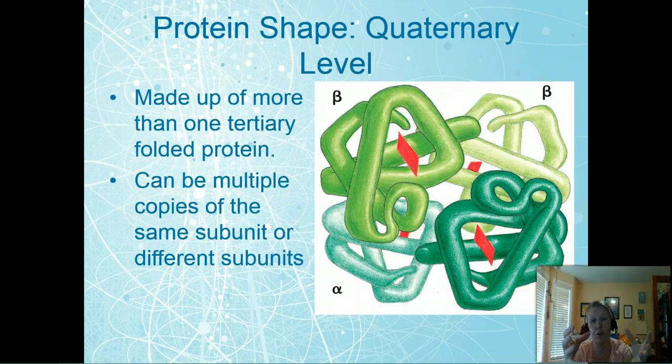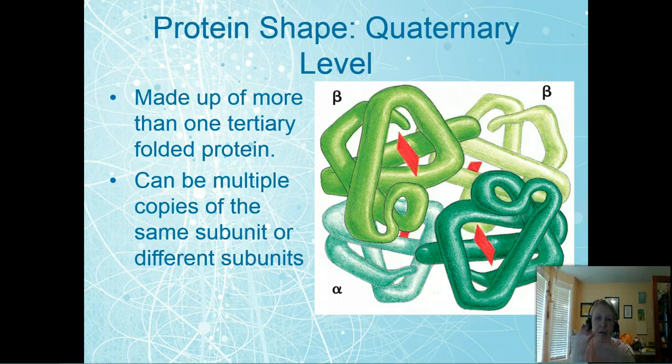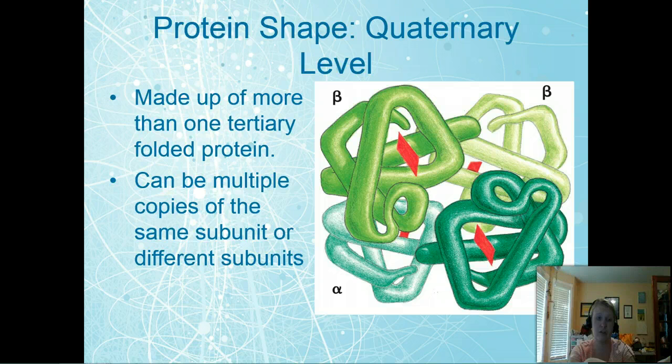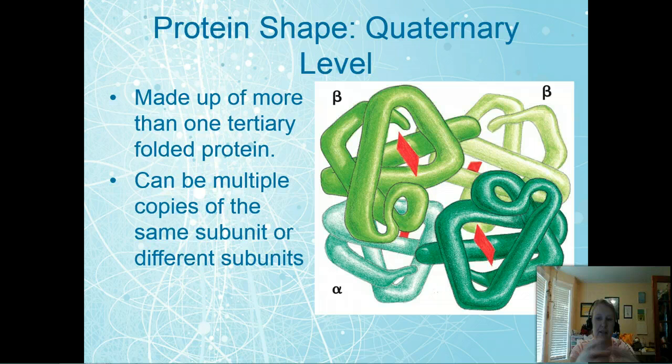When you have more than one of these domains this is where we get the quaternary level. So it has multiple domains in this case you can see the example hemoglobin we have two alpha subunits and two beta subunits or two alpha domains and two beta domains making up the protein hemoglobin. So this is how that works and this allows us for allows the oxygen molecules be carried and that's what you can see here with those red boxes on the picture.